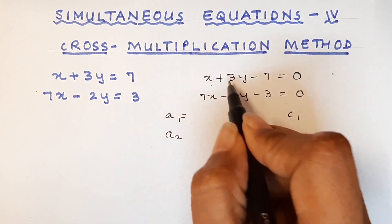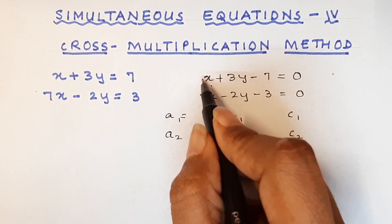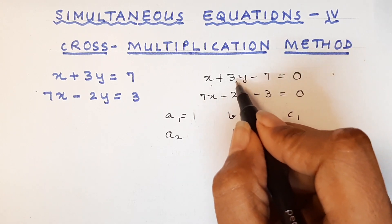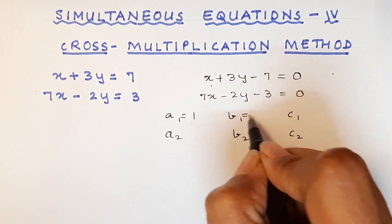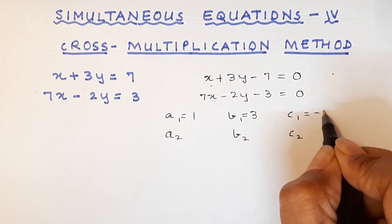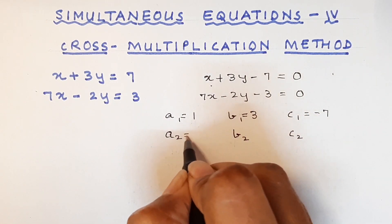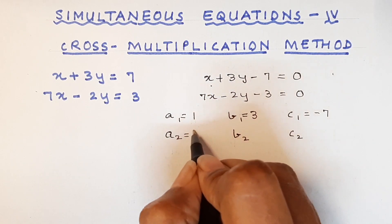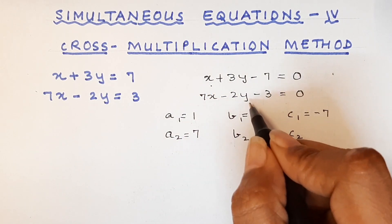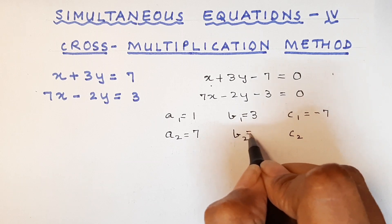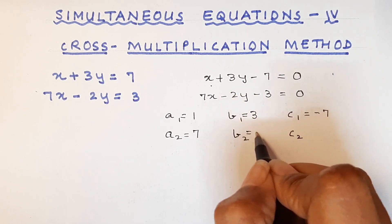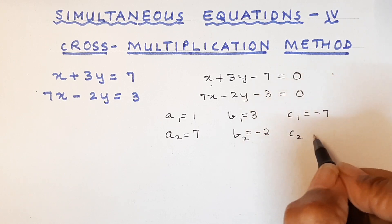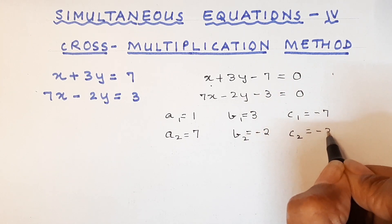What is our a1 in the first equation? It is only x which means a1 is 1. This is 3y so your b1 is 3 and c1 is minus 7. What is our a2? a2 is coefficient of x which is 7. What is our b2? Coefficient of y which is minus 2. And what is our c2? It is the constant here which is equal to minus 3.